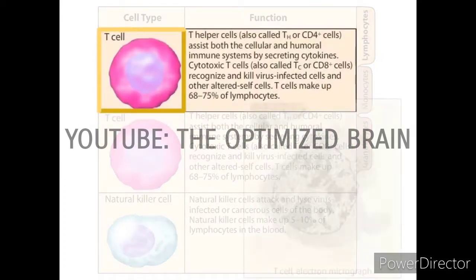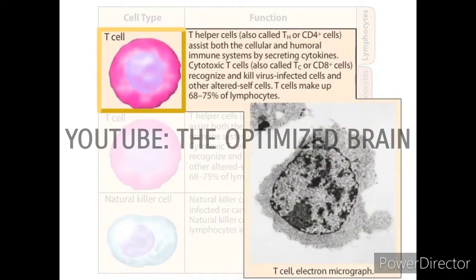T helper cells, also called TH or CD4+ cells, assist both the cellular and humoral immune systems by secreting cytokines. Cytotoxic T cells, also called TC or CD8+ cells, recognize and kill virus-infected cells and other altered self cells. T cells make up 68 to 75 percent of lymphocytes.